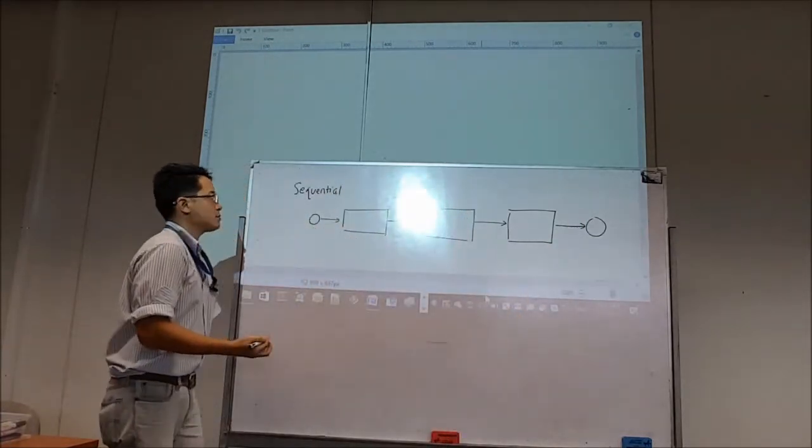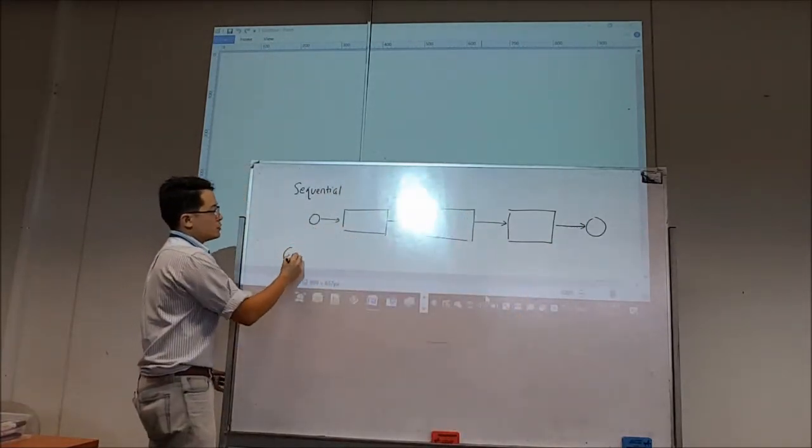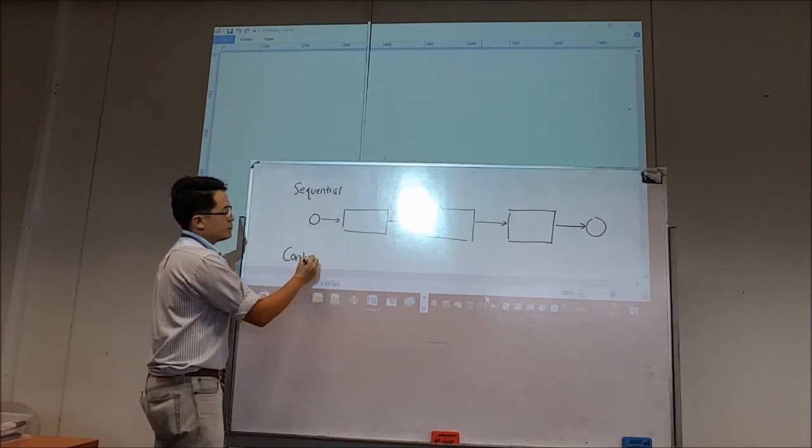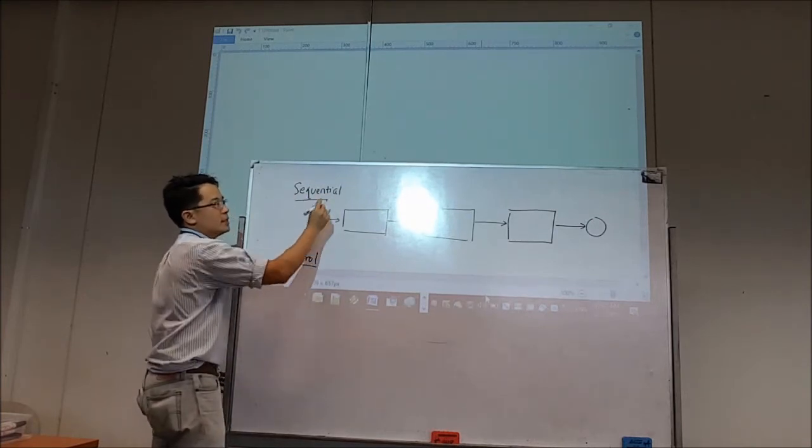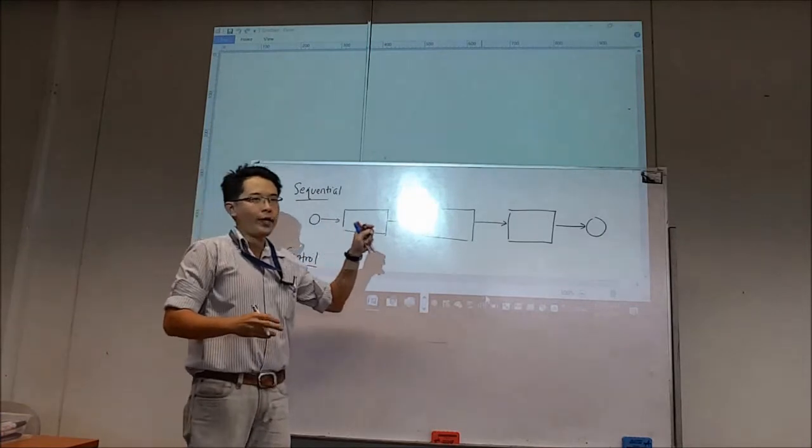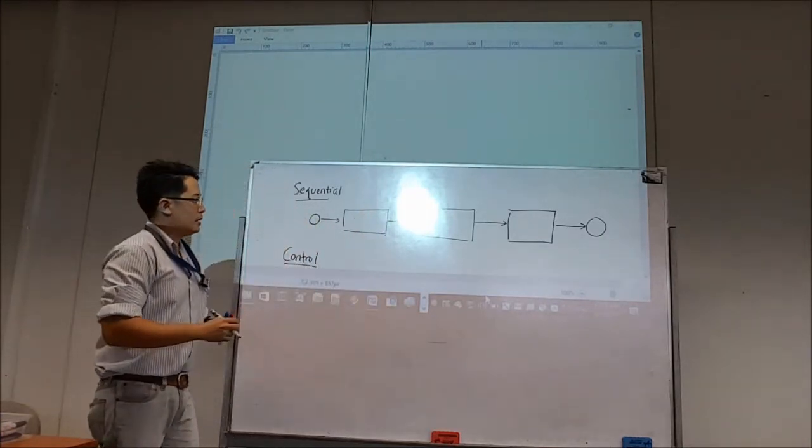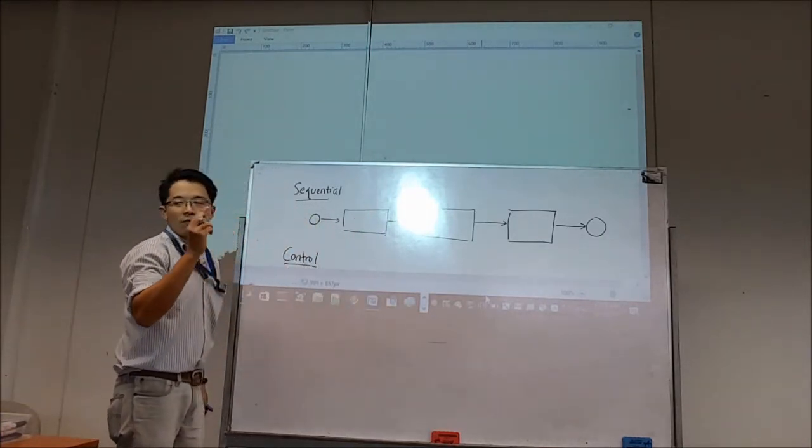Now this is sequential. The other type of control structures would be to ensure that the process is not following in one sequence. There are basically two types of control structures.